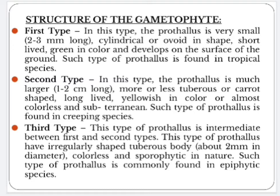Structure of the gametophyte: the spore is the first cell of the gametophyte. Spores are very small, tetrahedral and provided with two thin walls — outer exine and inner intine. Each spore contains a single nucleus and fats and oils as reserve food materials. Lycopodium is homosporous; hence the germination of spores produces a homothallic gametophytic plant or prothallus.